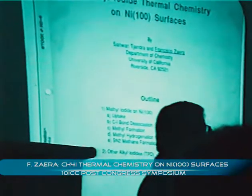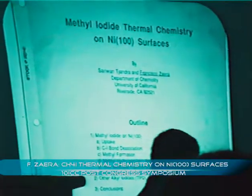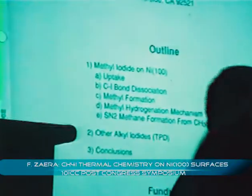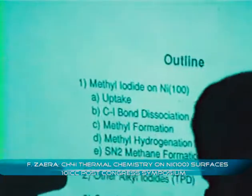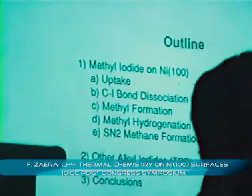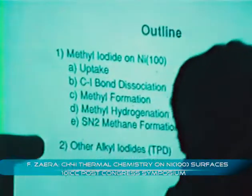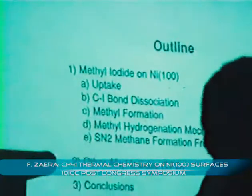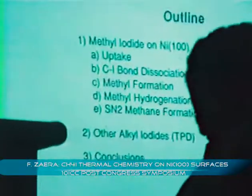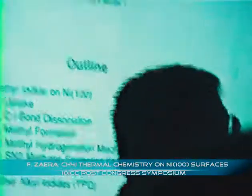To give you an example, alkyl halides belong to this family. If you take methyl iodide in this particular case, but it actually applies to any other alkyl halides, the carbon-iodine bond is only 56 kilocalories per mole. So in gas phase, you can actually activate that bond either thermally or photolytically, or even with electron bombardment, and then form methyl radicals.